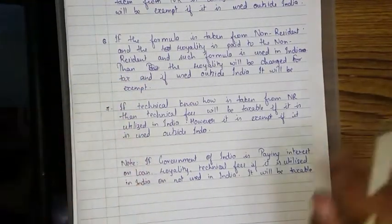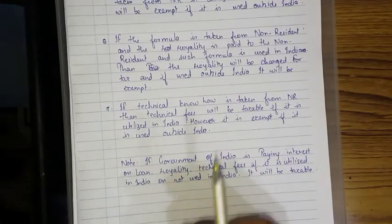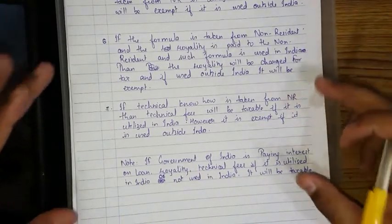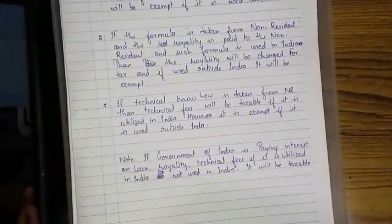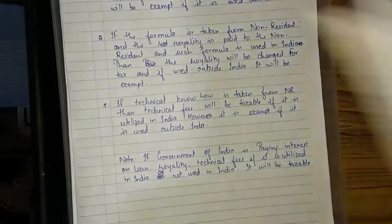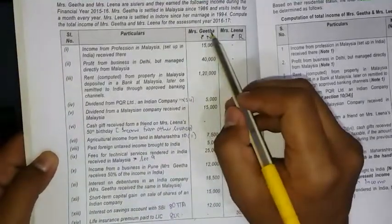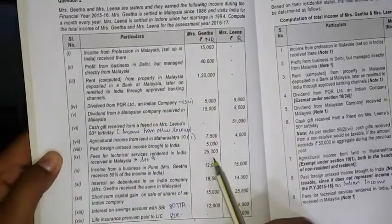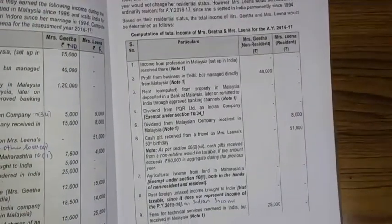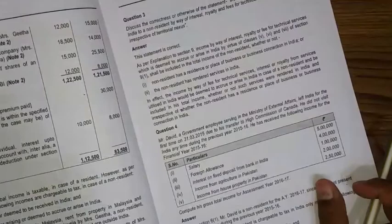Please note: if the government of India is paying interest on loan, royalty, or technical fees — whether utilized in India or not — it will be taxable. That was my mistake, please note it down. Now, regarding technical service fees: fees for technical service rendered by Gita in India but received in Malaysia — 25,000 will be a business connection under Section 9(c). This 25,000 will form part of Miss Gita's total income.